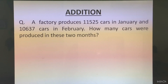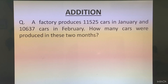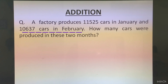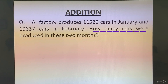I have taken an example here. A factory produces 11525 cars in January and 10637 cars in February. How many cars were produced in these 2 months? Children are very afraid of word problems. This is nothing but an integration of your English and Maths class. They have told us about a factory and its car production in January and February, and finally asked for the total production in the 2 months.